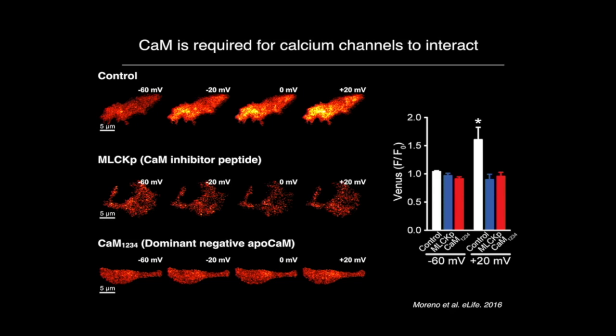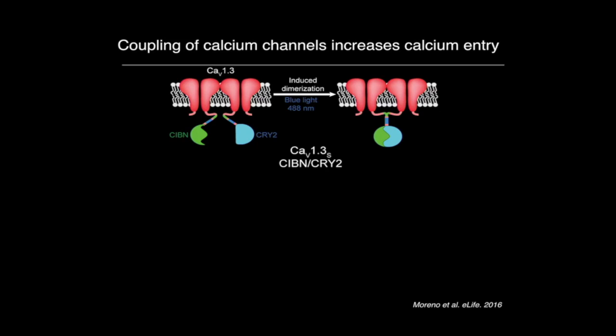Inside the cluster, the channels are touching each other. But does this change the function of the channels — the fact that they are touching? To answer this question, we used an optogenetic tool called the cryptochrome system, which has two components — one fused to each channel. When illuminated with blue light, the two proteins undergo a conformational change and their affinity for each other increases, forcing the channels to interact.